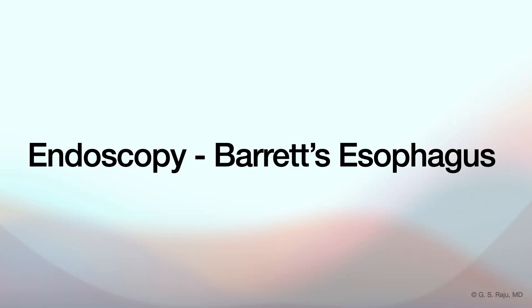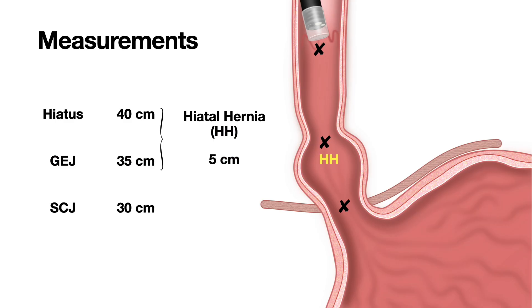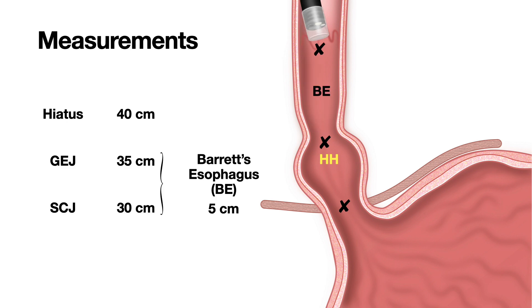Barrett's esophagus is a more serious consequence of long-term reflux — it's considered precancerous. It's where the normal squamous lining gets replaced by columnar cells, the kind you usually find in the stomach or intestine. The body is trying to protect itself from acid, but it's not a good change long-term. You track three key landmarks: first, the diaphragmatic pinch — the hiatus, say at 40 centimeters; second, the GE junction — top of the stomach folds, maybe at 35 centimeters — still a five-centimeter hernia; and third, the squamous-columnar junction, the SCJ — the visible line where the pale squamous lining stops and the redder columnar lining begins, say clearly at 30 centimeters.